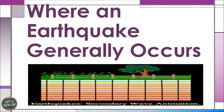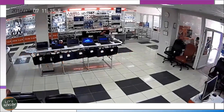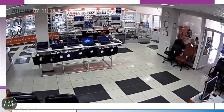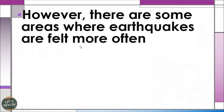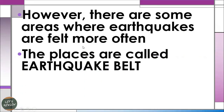When an earthquake generally occurs, based on the forecast of geologists, most earthquakes occur with a minimum magnitude, making them too weak and less likely to be experienced by people — people don't really feel them. However, there are some areas where earthquakes are felt more often, and these places are called earthquake hotspots. They are very destructive.